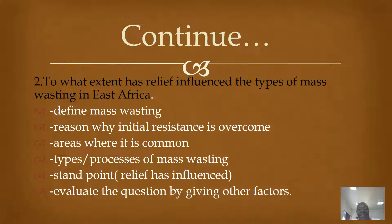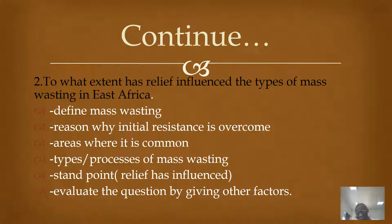The other question is: to what extent has the relief influenced the types of mass wasting in East Africa? Here, I expect a student to define mass wasting, give reasons why initial resistance is overcome, show areas where mass wasting is common, describe the processes in detail, and give a standpoint — to the smaller extent, relief has influenced the occurrence of mass wasting types in East Africa. Then evaluate by looking at other factors, where you can say to the greater extent, other factors have influenced the occurrence of mass wasting.